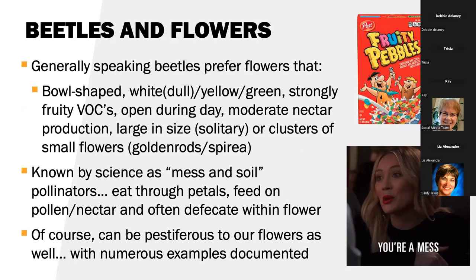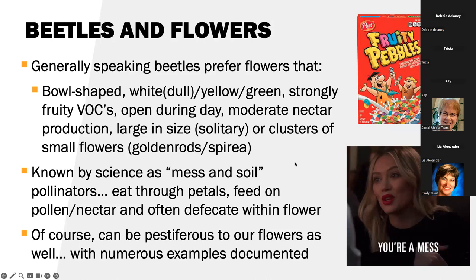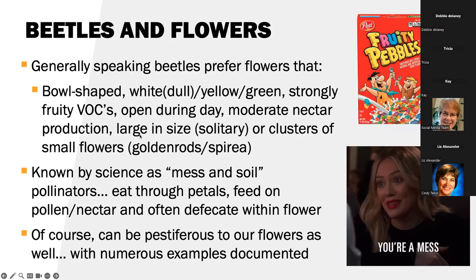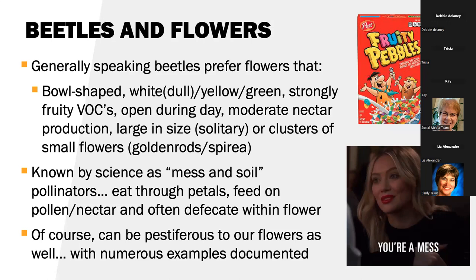Generally speaking, beetles like flowers that are bowl-shaped, if they're white, dull, yellow, or green, if they have strong, fruity, volatile organic compounds. Flowers that are open during the day, because most beetles are diurnal. Moderate nectar production. And typically they like flowers that are large in size, that is solitary — kind of like that magnolia flower — or clusters of small flowers, like the goldenrods, spiraea, stuff like that.